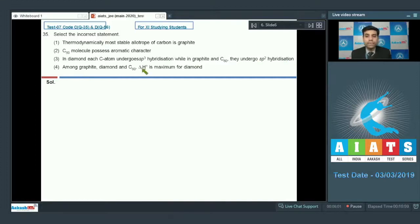Fourth is among graphite, diamond and C60, standard enthalpy of formation is maximum for diamond. So we need to find the incorrect statement. If I talk about graphite, diamond and C60, standard enthalpy of formation is maximum for C60. Hence the correct answer for this question will be option 4.